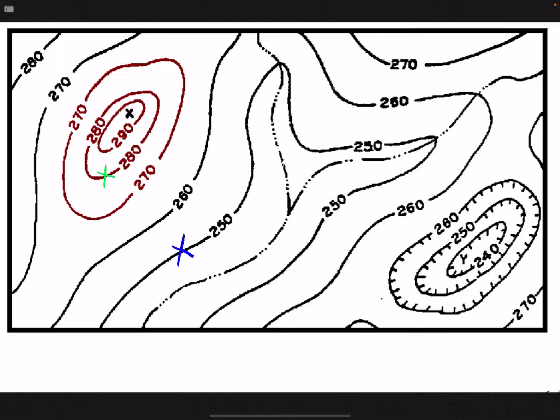So the first thing is we are going to look at our two points. We are looking at the blue X and the green X.